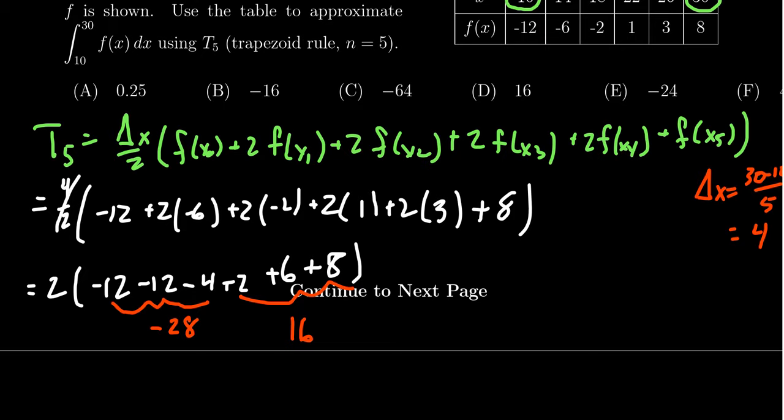I might embarrass myself here but if we do this, 28 take away 16 is going to give us 12. That should be a negative 12 like so. Times that by 2, we're looking for a negative 24, which would give us as our final answer E right here.